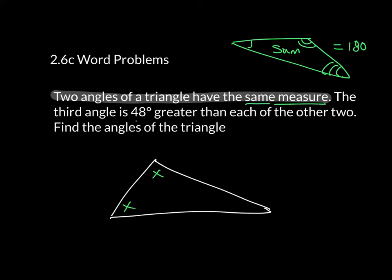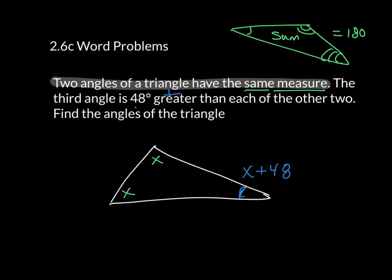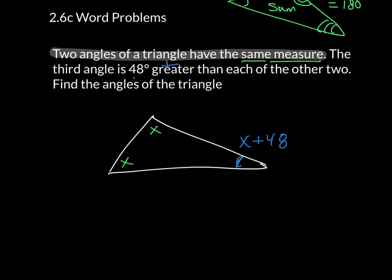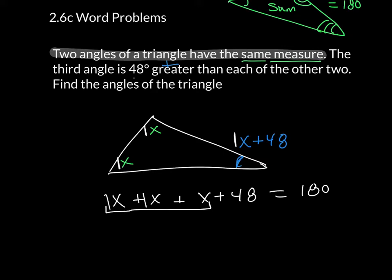The word 'greater' means 'more than' or to add. So that means this other angle is going to be X plus 48. Now I have to add all three of those up. That's X plus X plus X plus 48 is equal to 180. All I did was add the three X's together — each is understood to have a coefficient of 1 — so that gives me 3X plus 48 is equal to 180.